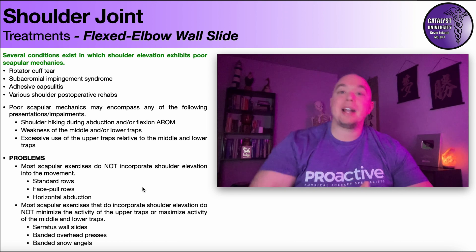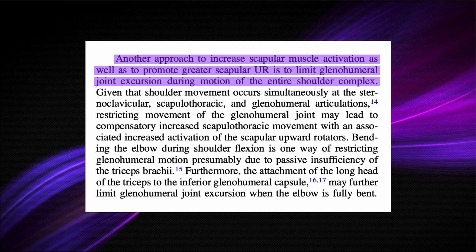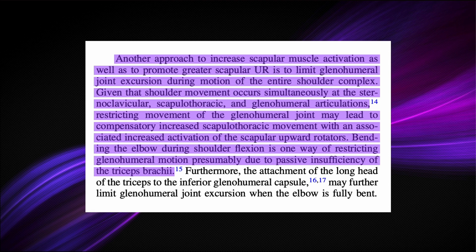Fortunately, there's a paper that investigated this. The paper is titled: 'Bending the elbow during shoulder flexion facilitates greater scapular upward rotation and a more favorable scapular muscle activation pattern.' Here's the logic: another approach to increase scapular muscle activation and promote greater scapular upward rotation is to limit glenohumeral joint excursion during motion of the entire shoulder complex. Given that shoulder movement occurs simultaneously at the sternoclavicular, scapulothoracic, and glenohumeral articulations, restricting movement of the glenohumeral joint may lead to compensatory increased scapulothoracic movement with associated increased activation of the scapular upward rotators. Bending the elbow during shoulder flexion is one way of restricting glenohumeral motion, presumably due to passive insufficiency of the triceps brachii.